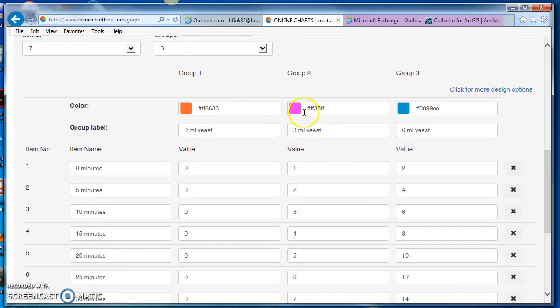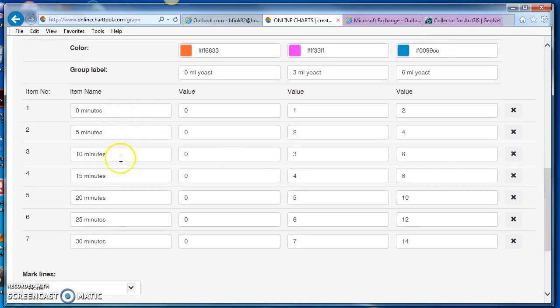Notice that the different tubes will have different colors. Group 1, 2, 3. And then for the different number of minutes, I've got the item numbers and then the values for each of those for each tube. As is pulled from the table.